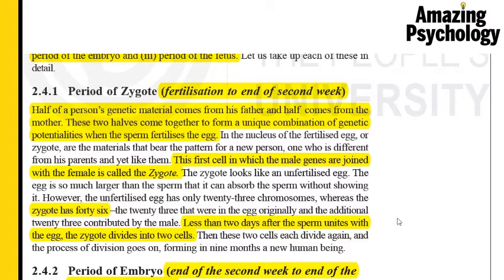About two days after fusion occurs and the zygote is formed, the zygote starts dividing into two cells, and continues dividing, forming a collection of divided cells. This is what normally happens during the period of the zygote.